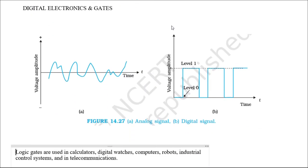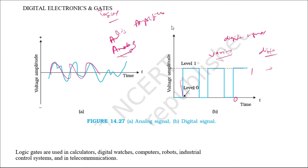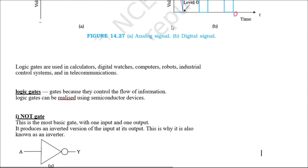Moving to the next topic: digital electronics and logic gates. Normally, any signal which is continuous comes under the category of analog signal. Digital signaling uses only two levels, varying between zero and one. These are known as digital signals.